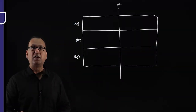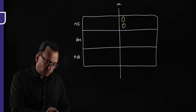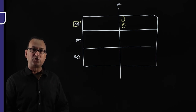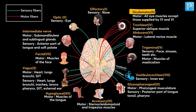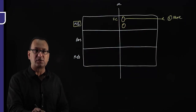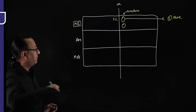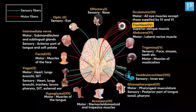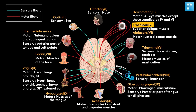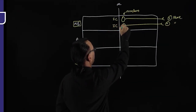The nuclei of cranial nerves 3 and 4 are in the midbrain. A nucleus is a collection of neuron cell bodies. At the level of the superior colliculus is the nucleus for nerve 3, the oculomotor nerve. At the level of the inferior colliculus is the nucleus for nerve 4, the trochlear nerve. Nerves 3 and 4 arise from the midbrain.